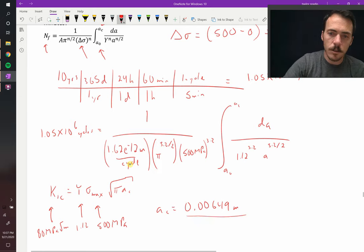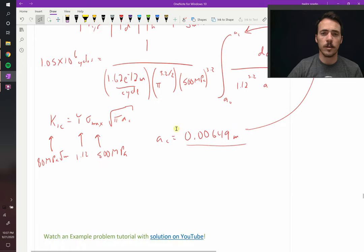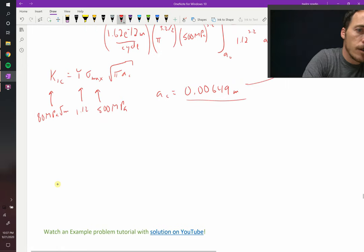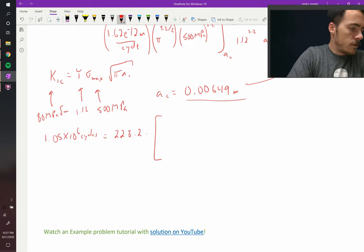That is going to get plugged into our critical flaw size of the integral. So let's go ahead and take that integral and multiply out everything in the pre-integral term, and we get the following: 1.05 times 10 to the sixth cycles is going to be equal to 228.2 multiplied by the integral.